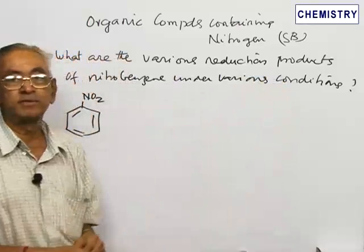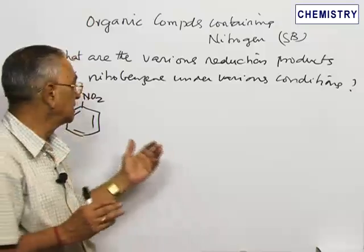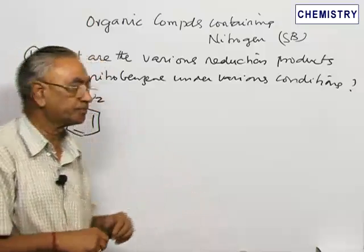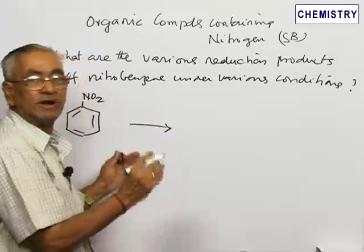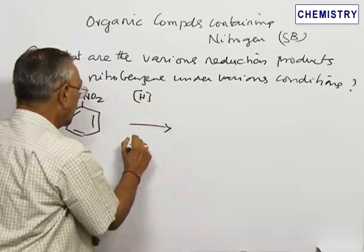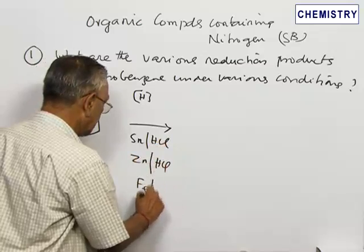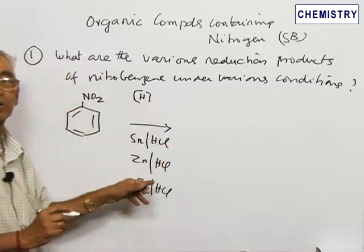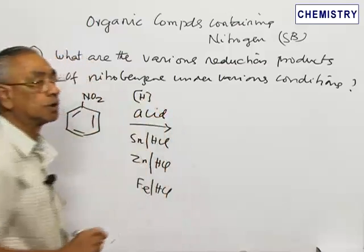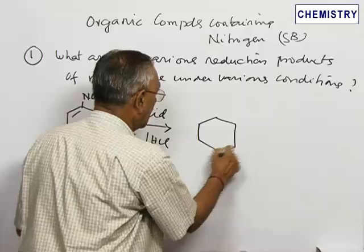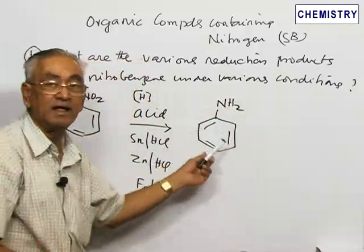Depending upon the reduction conditions employed, different types of reduction products can be obtained. The first is reduction of nitrobenzene in acid medium. Hydrogen is generated by reacting tin metal, zinc metal, or iron with HCl. In all these cases, the product obtained is aniline — the nitro group is directly reduced to give aniline. This is in fact one of the methods of making aniline from benzene.